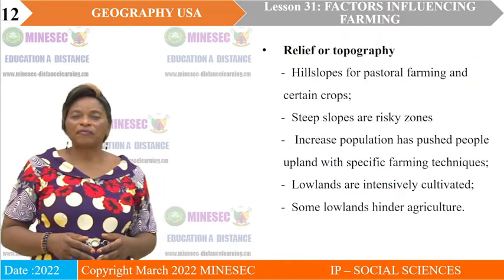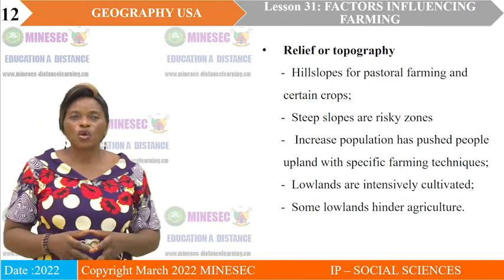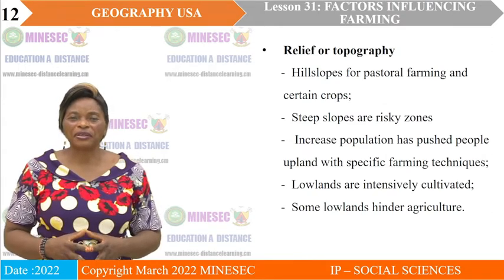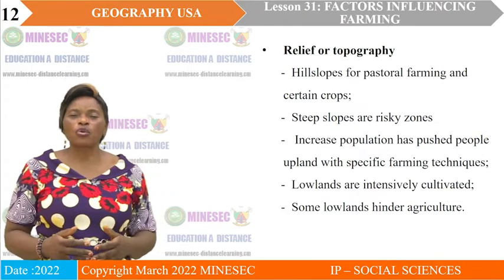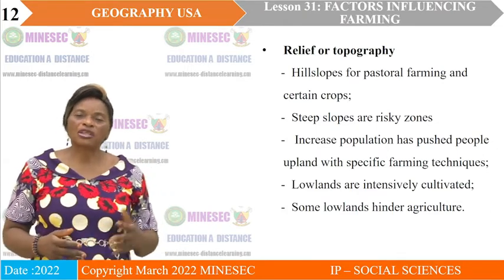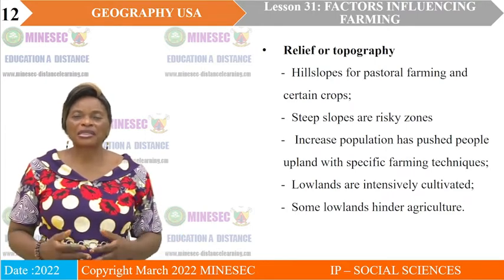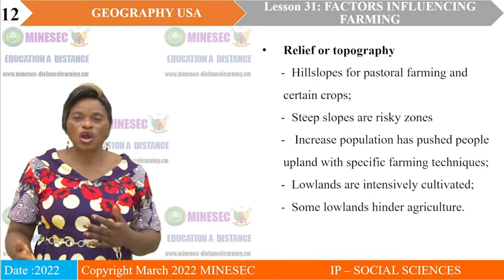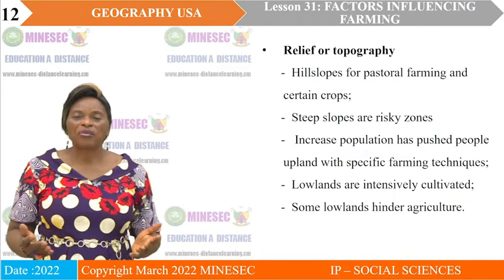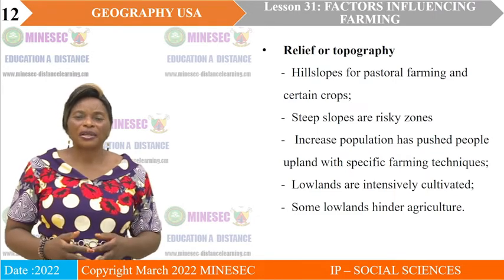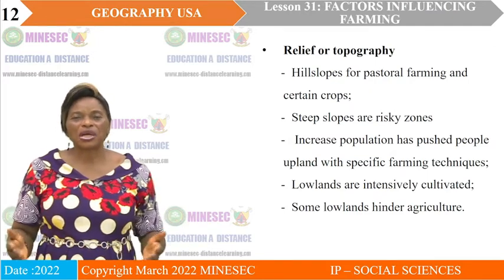The next factor is relief or topography. Hill slopes are very good for pastoral farming because the soils are always shallow, especially on steep slopes. But hill slopes where cattle can graze can sustain the growth of pasture. On the Adamawa Plateau and on the Western Highlands, there is pastoral farming.